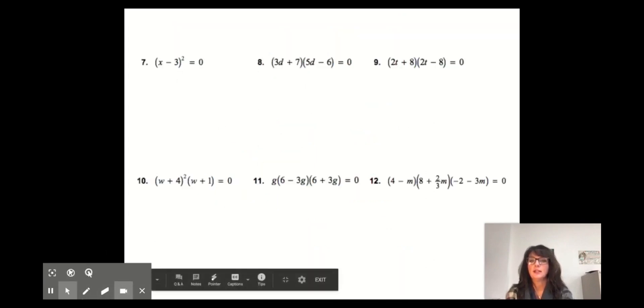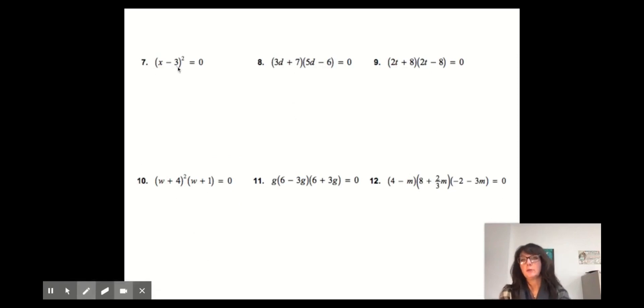Moving right along. So let's go ahead and solve some of these. We're going to have a repeated root, because this expands to x minus 3, x minus 3, repeated factor. Therefore, x minus 3 is equal to 0. When you add 3 to both sides, you get x is equal to 3. So this is one of those repeated roots. So for number 8, go ahead and solve number 8, and let me know what the roots of this equation are. I'm going to circle that, pause the video to solve number 8. I'm going to move right along to number 9.